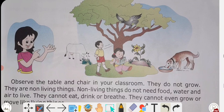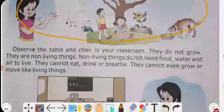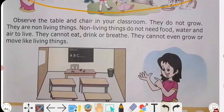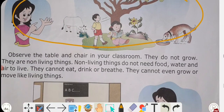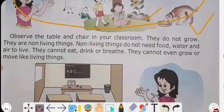Here are pictures of things in our surroundings. A stone is a non-living thing because it is not able to grow. But a dog is a living thing — first it is a puppy, then it grows into a dog, growing bigger day by day. So it is called a living thing.